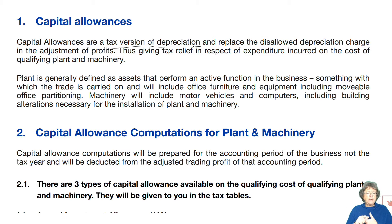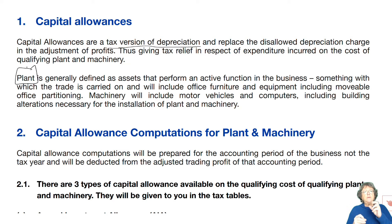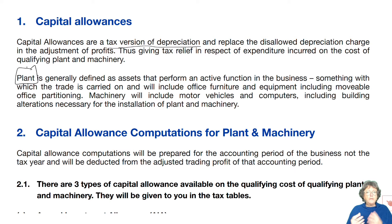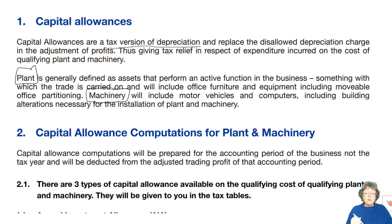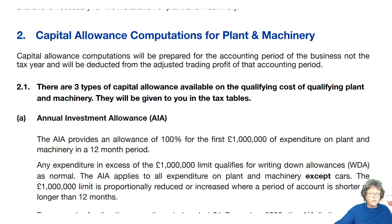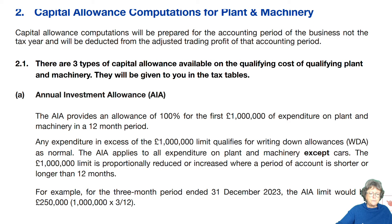Plant is an asset which performs an active function within the business. It includes office furniture, equipment, anything movable. There are lots of legal cases related to this, but you don't need to know what they are. You will also see machinery, which is what it says. It includes vehicles, computers, building alterations, anything to do with equipment that you use within your business.